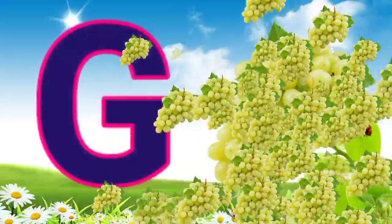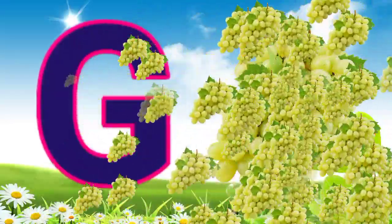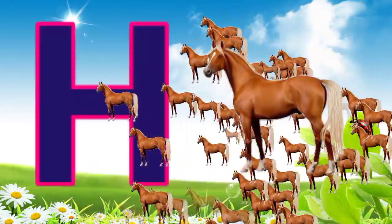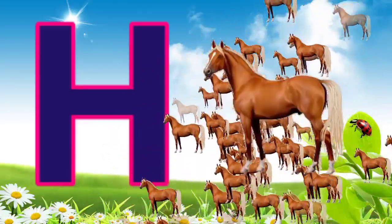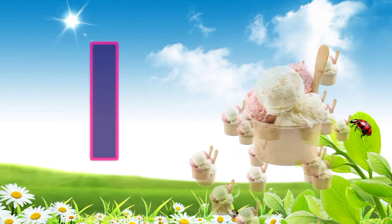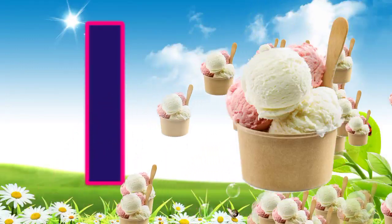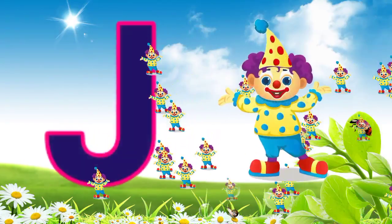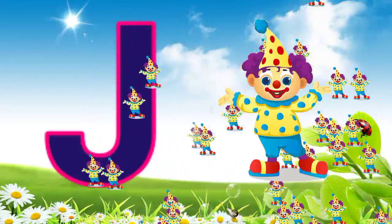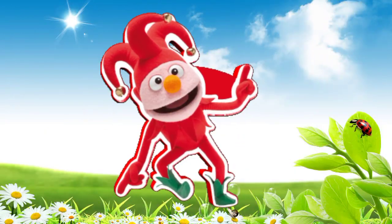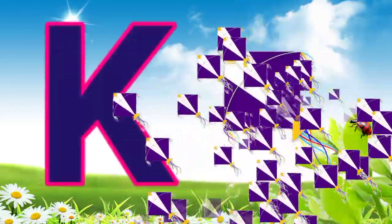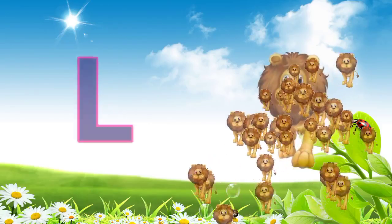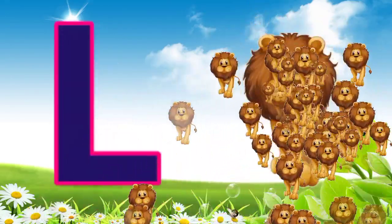G. G for grapes. H. H for horse. I. I for ice cream. J. J for joker. K. K for kite. L. L for lion.